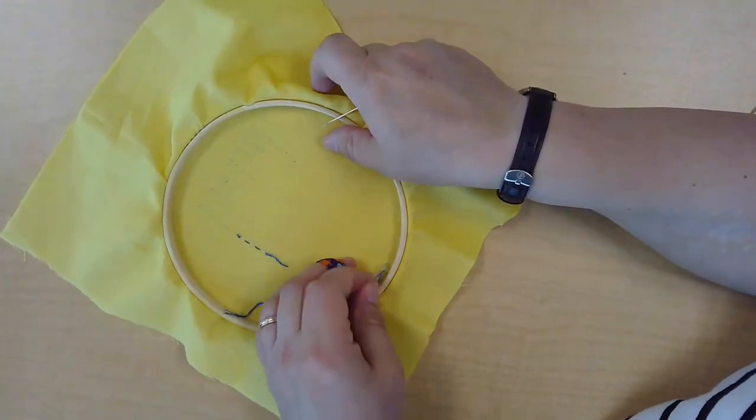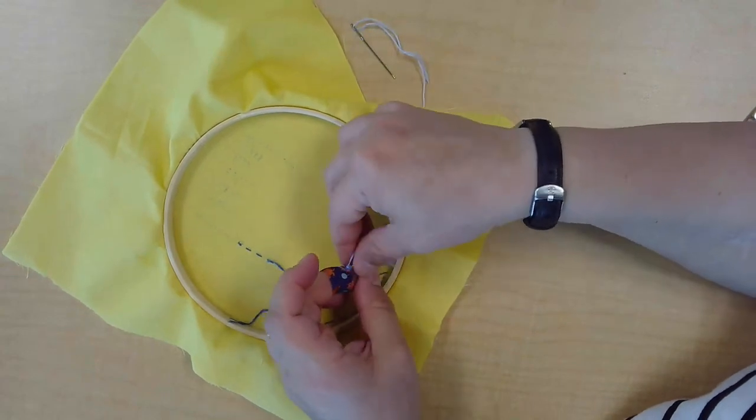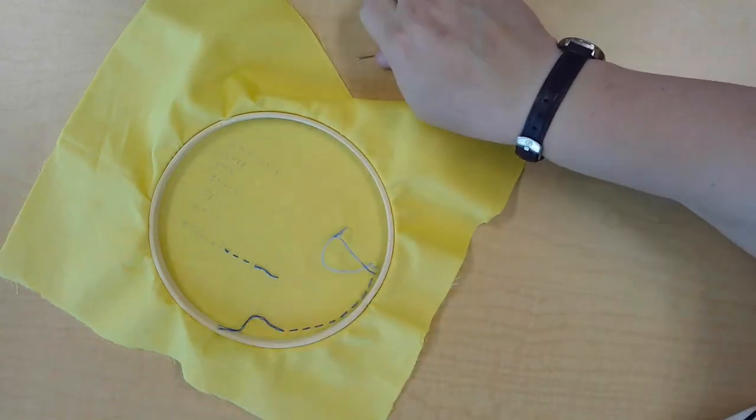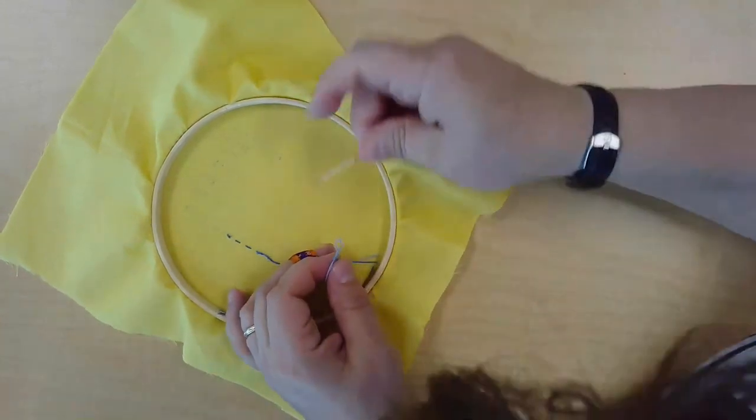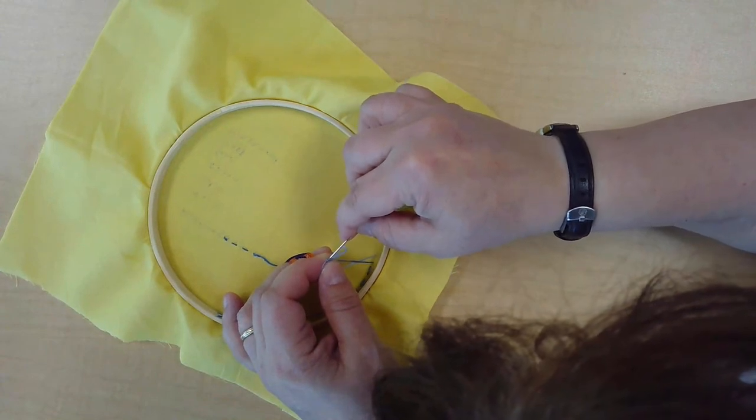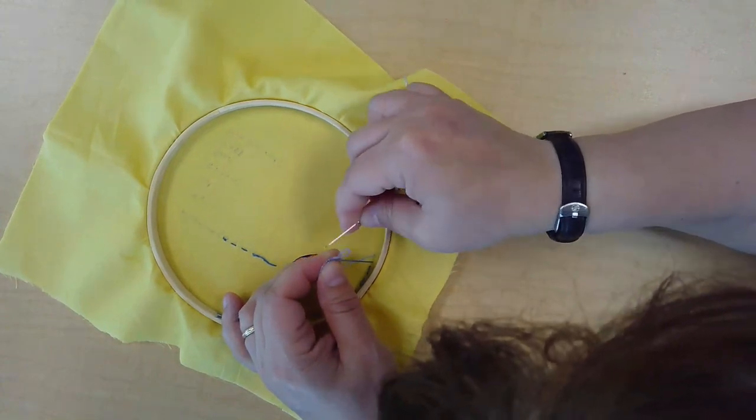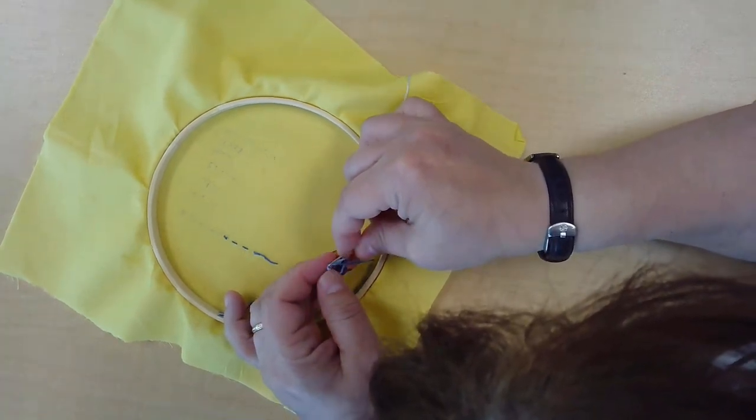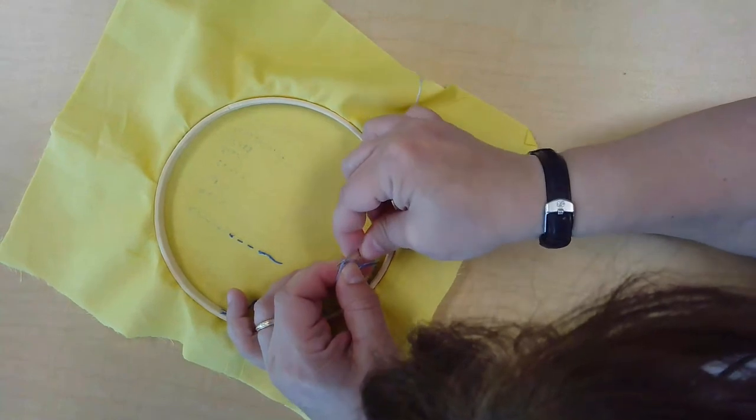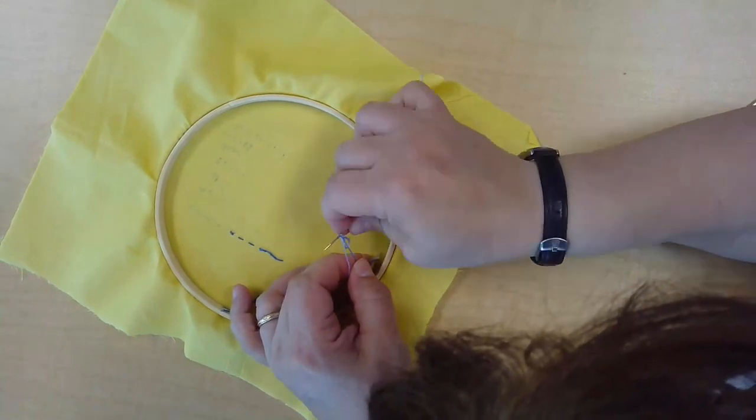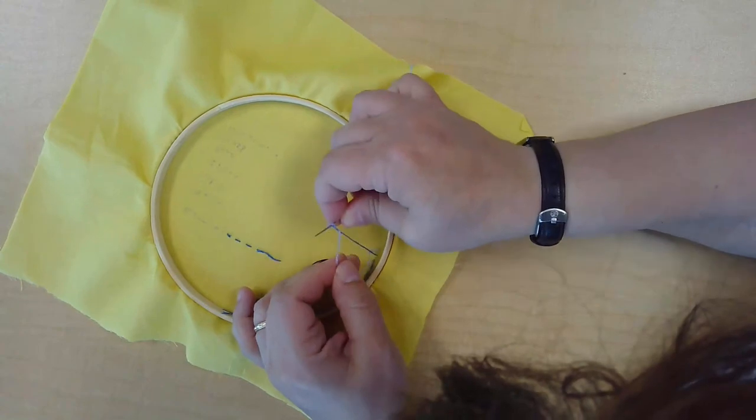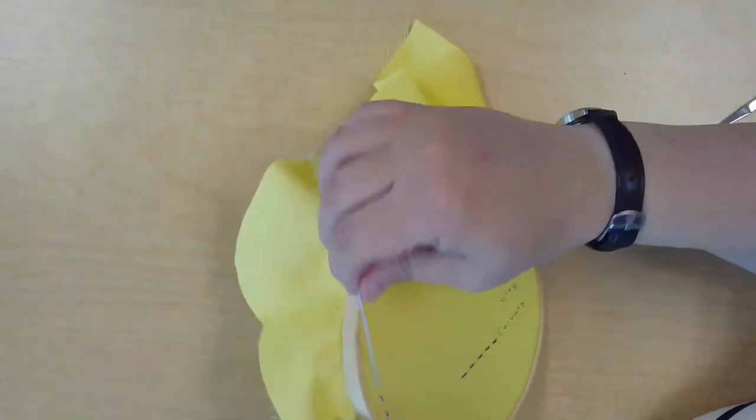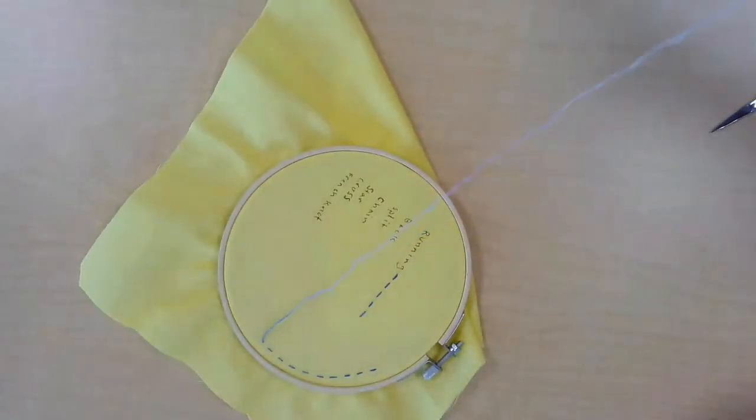All right. Now, floss likes to get tangled in the back. When this happens, sometimes you need to undo a knot in the back, and you may need to use your needle. You can see here, you stick it in the center of the knot and try to wiggle it apart. And then you can undo your knot. Just likes to really tangle itself up.